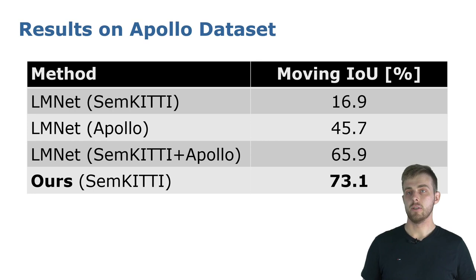We train on the Semantic KITTI data and evaluate on the Apollo dataset. Our method works out of the box with a moving IoU of 73.1% and can even outperform LMNET, which uses domain adaptation by training on data of the target domain.